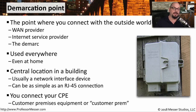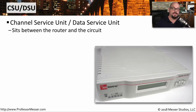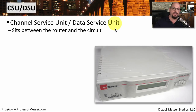On your side of the demarc, you connect your CPE, or your customer premises equipment. You may hear this abbreviated as your customer prem. If this is a traditional T1 or T3 connection, your customer premises equipment may first be a CSU-DSU. This is a channel service unit slash data service unit. It sits between your router and the circuit that was just installed from the demarc.